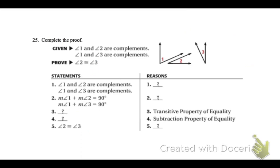On 25, our reason for the very first one, it was up here in the given, so that's just given. On 2, the angles 1 and 2 are complements and 1 and 3 are complements, and complement means they add up to 90, so that's the definition of complementary.